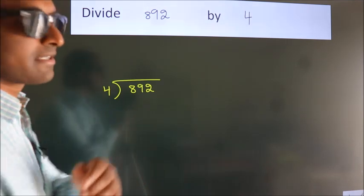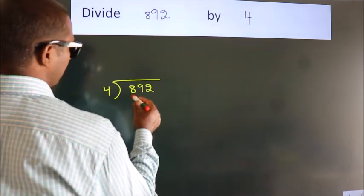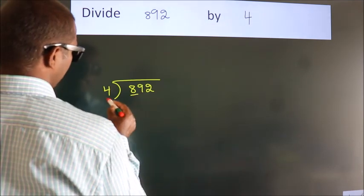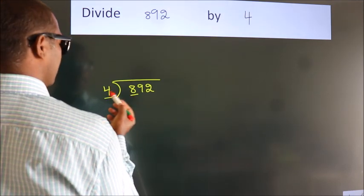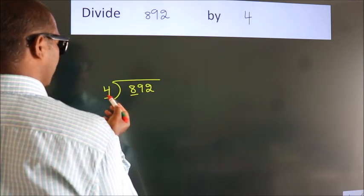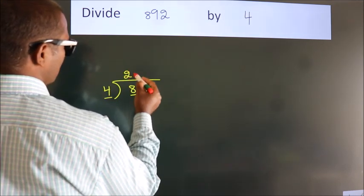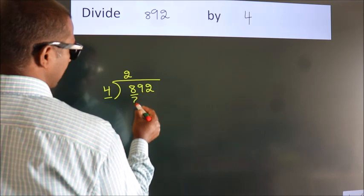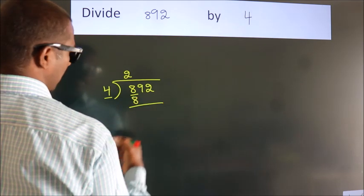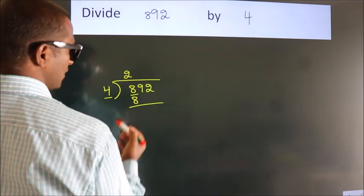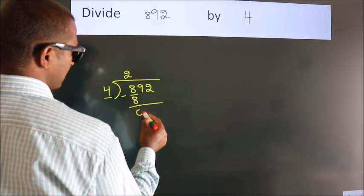Next, here we have 8, here 4. When do we get 8 in the 4 table? 4 twos are 8. Now we should subtract. We get 0.